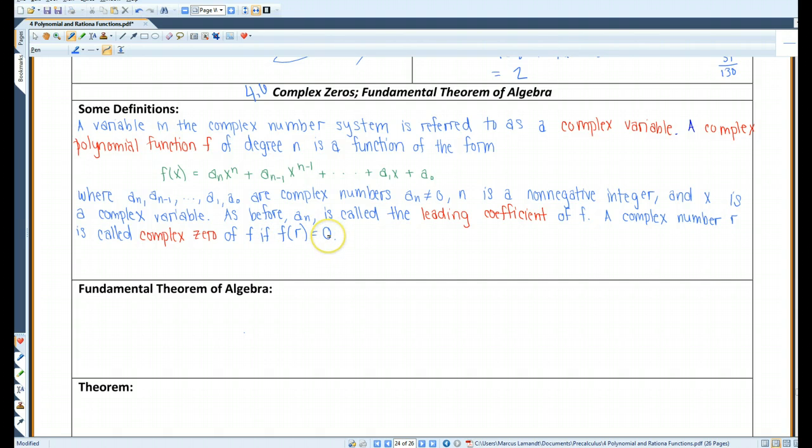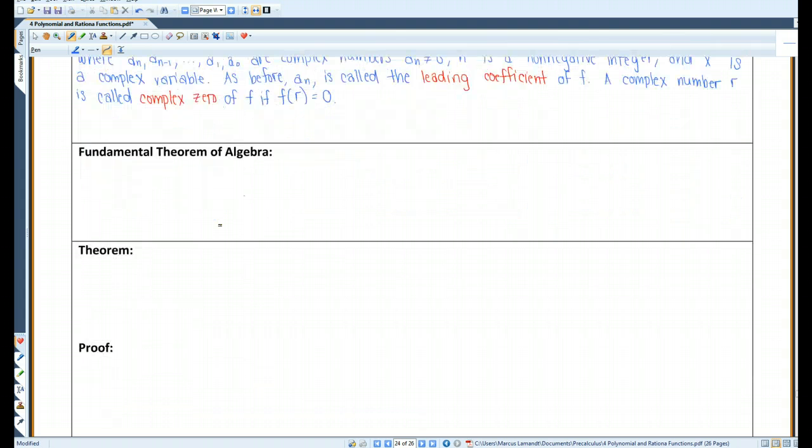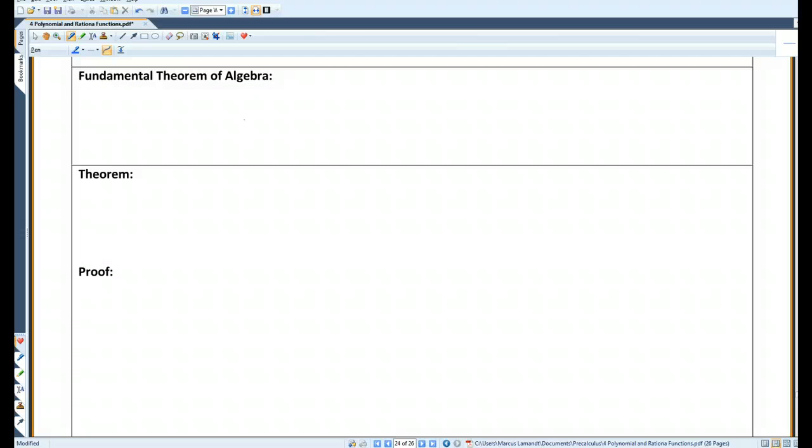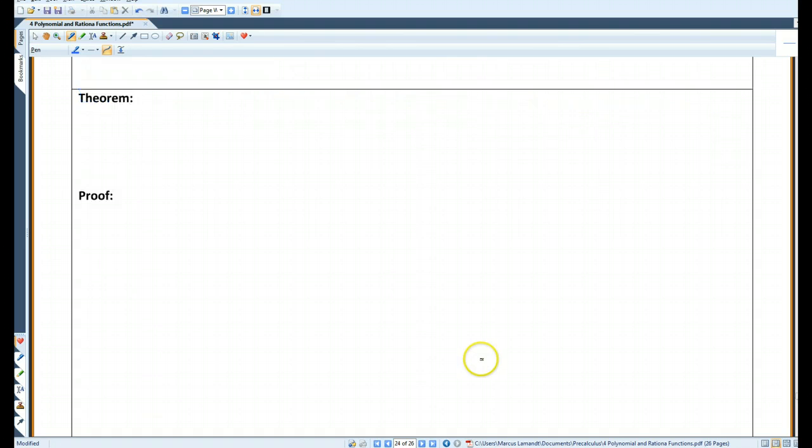So before we were dealing with real zeros, now we're dealing with complex zeros. The fundamental theorem of algebra: Every complex polynomial function f of x of degree n greater than or equal to 1 has at least one complex zero.